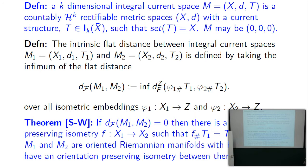The integral current space definition: (X, d, T) with X a countably H^k rectifiable metric space and T an integral current such that set T = X, allowing also the zero space (zero, zero, zero) for collapsing. The intrinsic flat distance between two integral current spaces (X1, d1, T1) and (X2, d2, T2) is the infimum of the flat distance between the push-forwards of the currents, over all complete metric spaces Z and isometric embeddings phi_1, phi_2 of X1, X2 into Z.